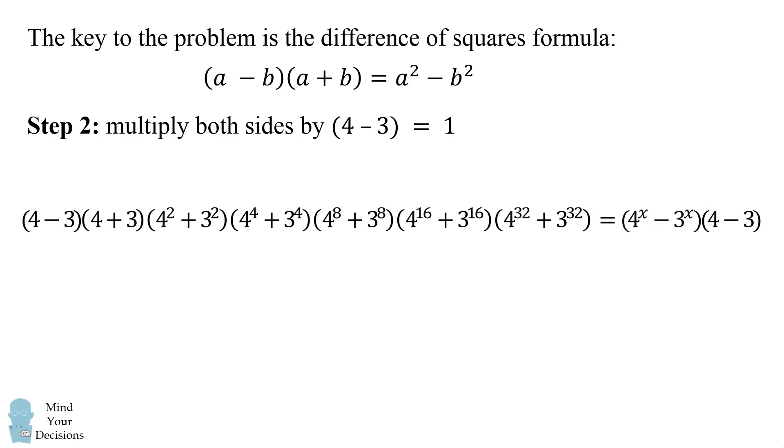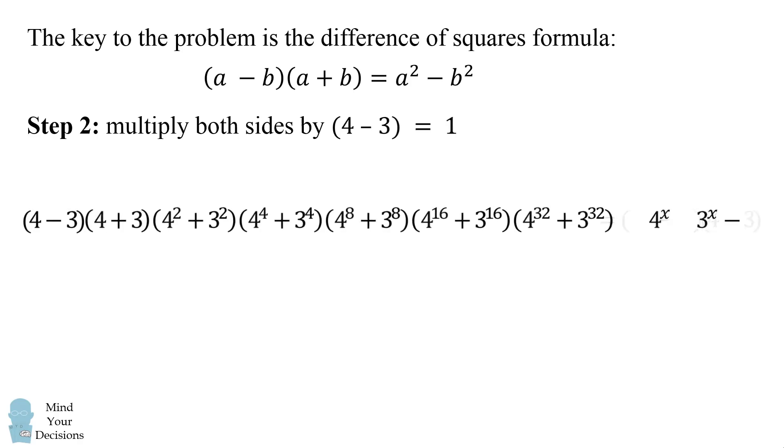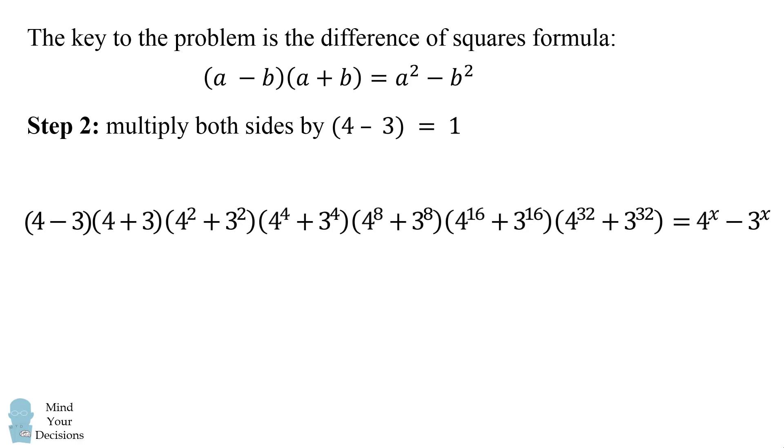On the right-hand side, we'll simplify this 4 minus 3 and make it equal to 1. So the right-hand side we still have 4 to the power of x minus 3 to the power of x. But on the left-hand side this quantity 4 minus 3 serves another purpose.